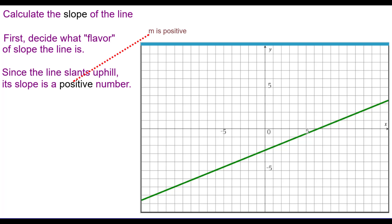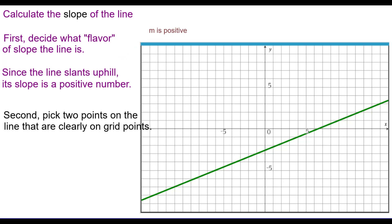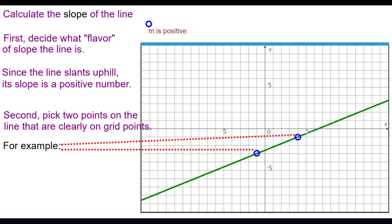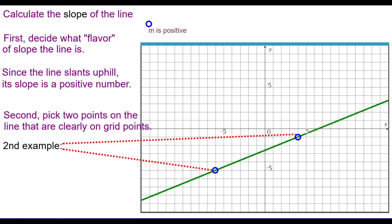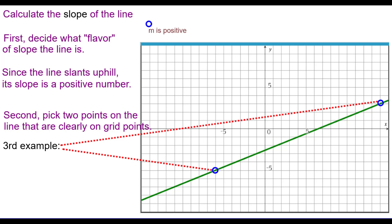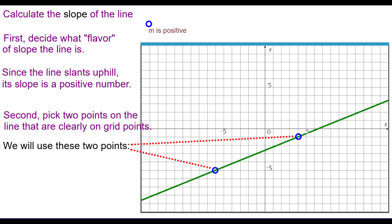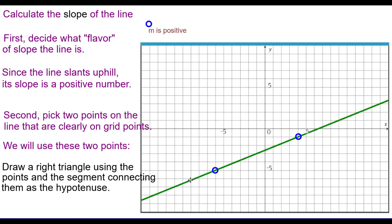So I'm going to make note that M, our abbreviation for slope, is positive. Second, pick two points that are clearly on grid points that are on the line. For example, I could pick these two — those are definitely at the intersection of grid lines. There are several we could use and several we don't want to use. For our example, we'll use these two points right here.